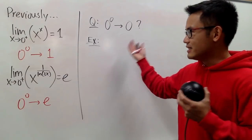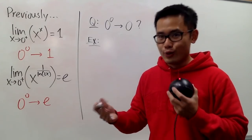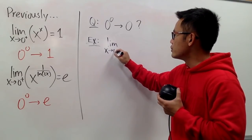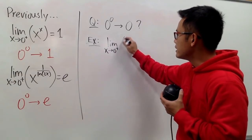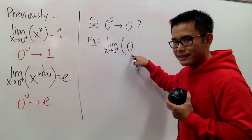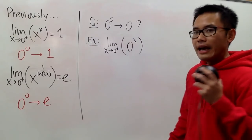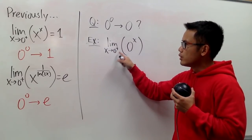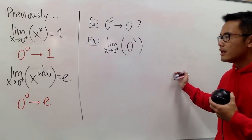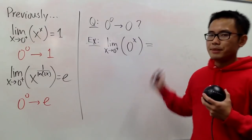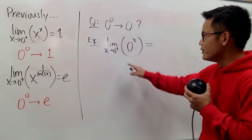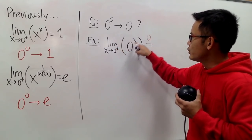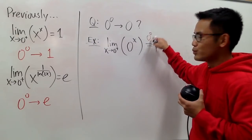Here I'm going to provide you guys with an example. Some of you guys may not like this example because I will be using 0 already. Anyway, here is the example: the limit as x goes to 0 plus, and the function is 0 for the base to the x power. I just care about the positive x values, so we're talking about x toward 0 plus. When you plug in 0 plus into this x, we do have a 0 to a 0 situation.